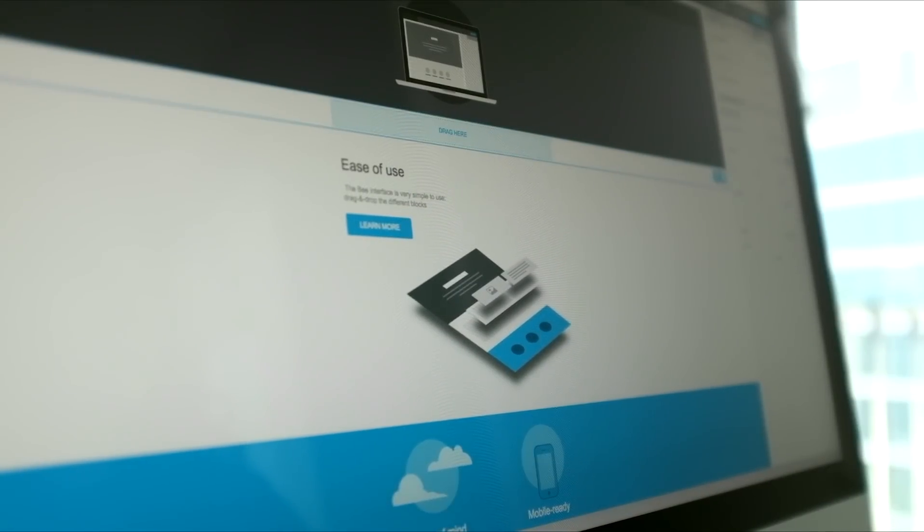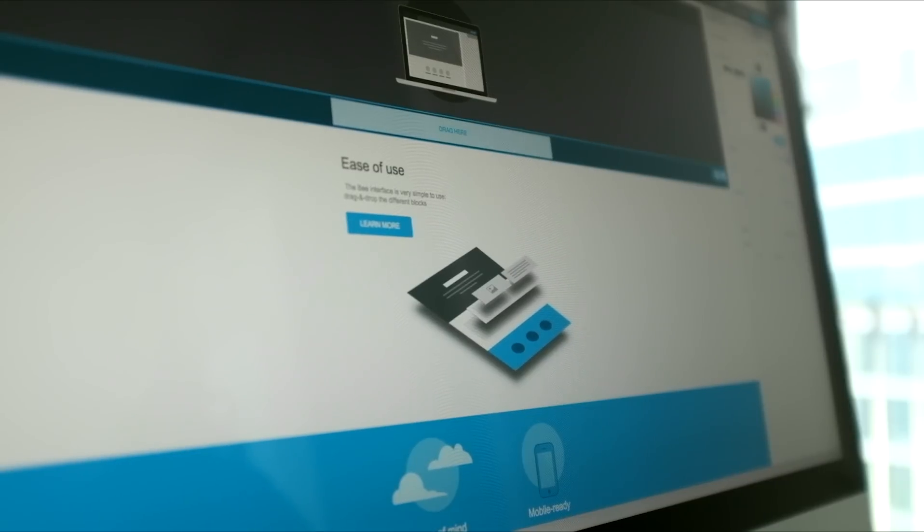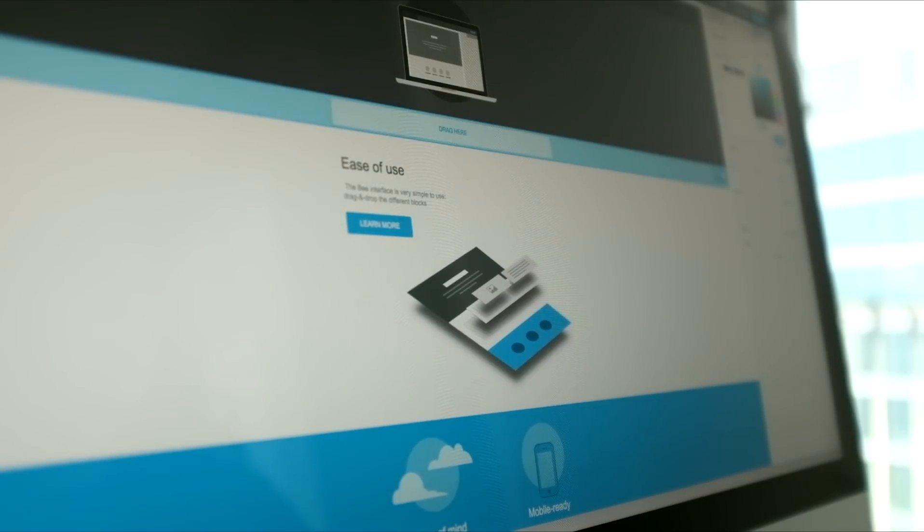First of all, we added control at the row level, so email designers will now be able to assign different background colors and different properties to different rows within the email to visually separate different sections of the message.